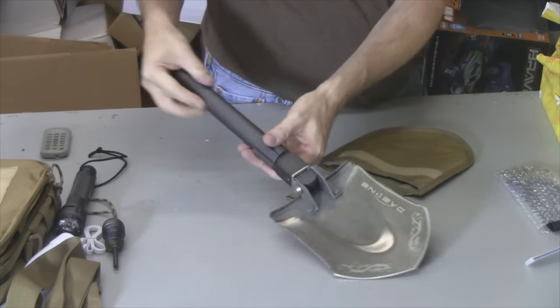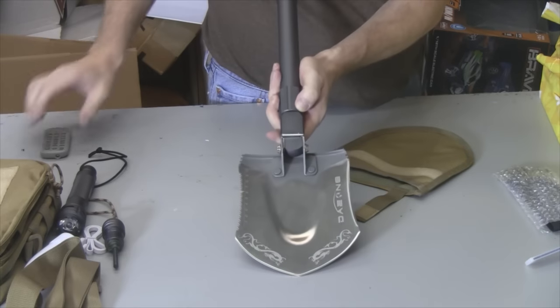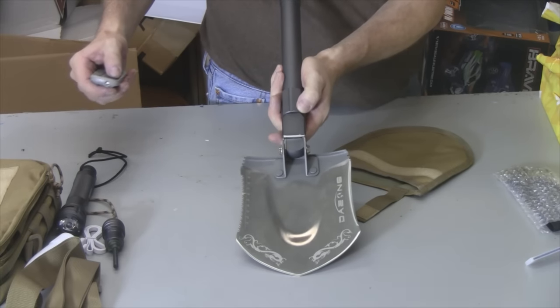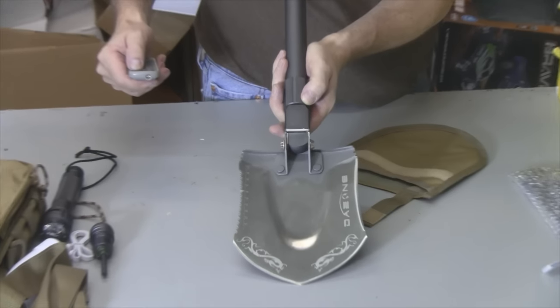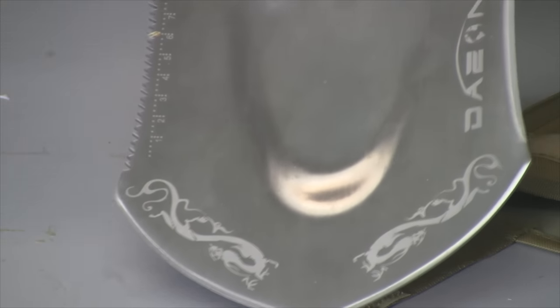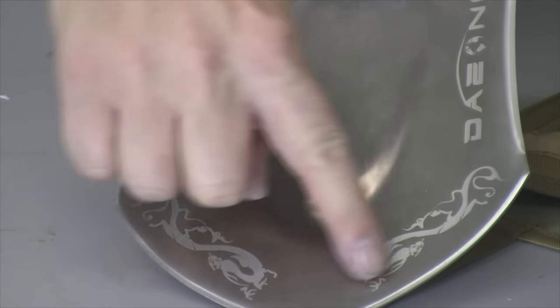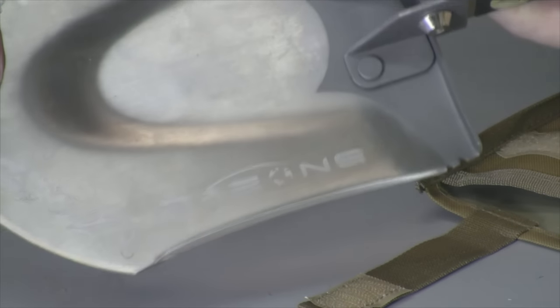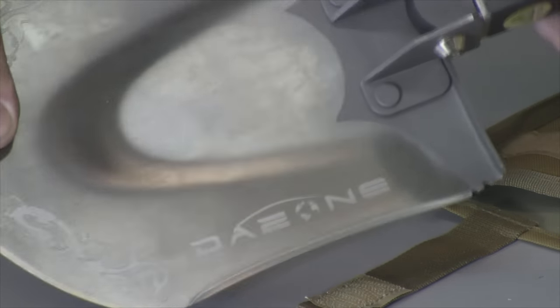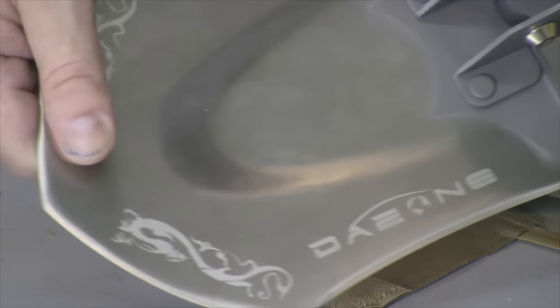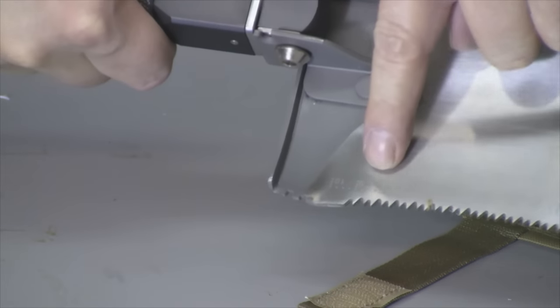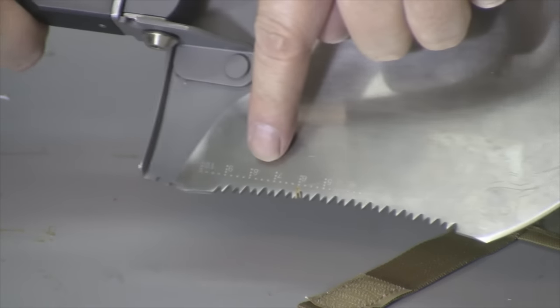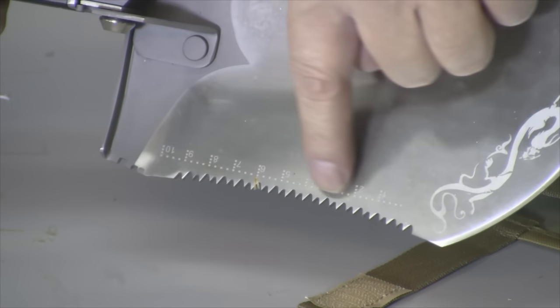Let me zoom in here on the shovel. You can see there's a design on there, these are dragons, and here's the DAZN logo right here. You can see that kind of reflecting off the light here. And on this side right here, there we go, there's a ruler. I guess that's centimeters.